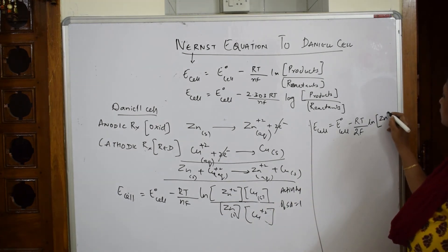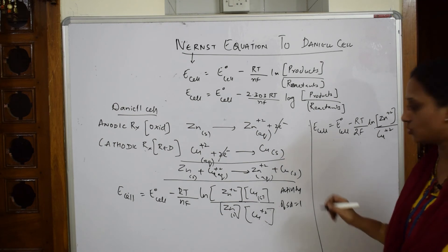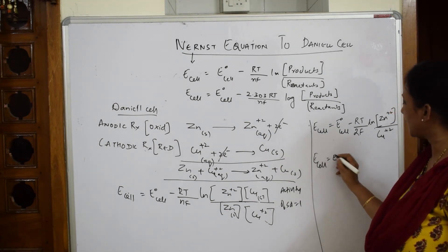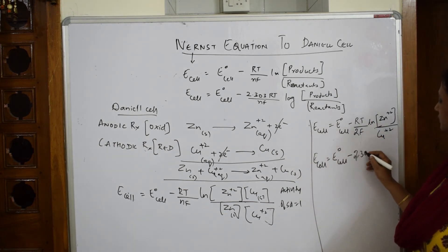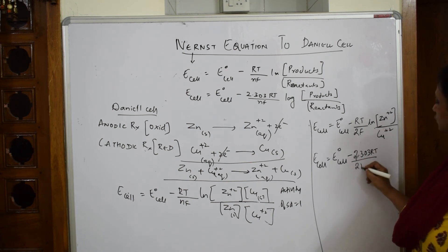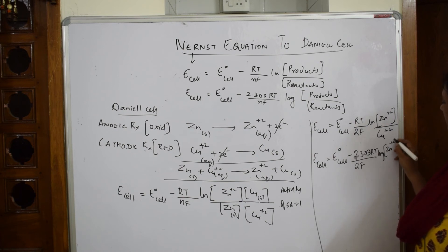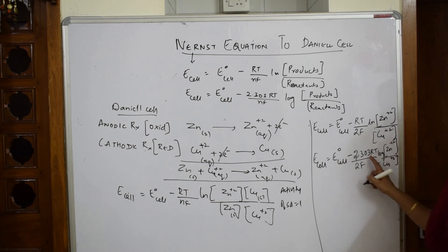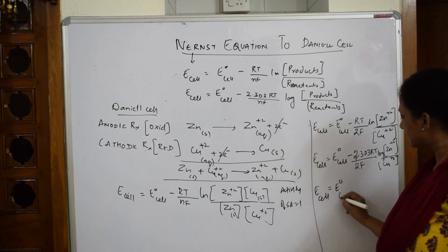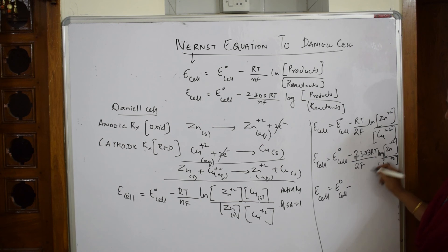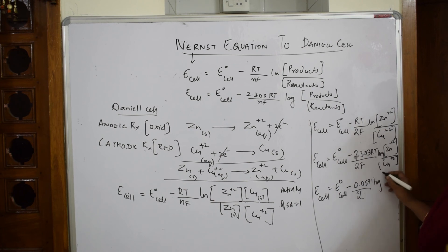Converting from ln to log form by multiplying with 2.303: E_cell = E°_cell minus 2.303 RT by 2F times log([Zn²⁺]/[Cu²⁺]). Substituting the known values — gas constant R = 8.314, absolute temperature T, and Faraday's constant F — and multiplying through, this gives 0.0591 divided by 2.